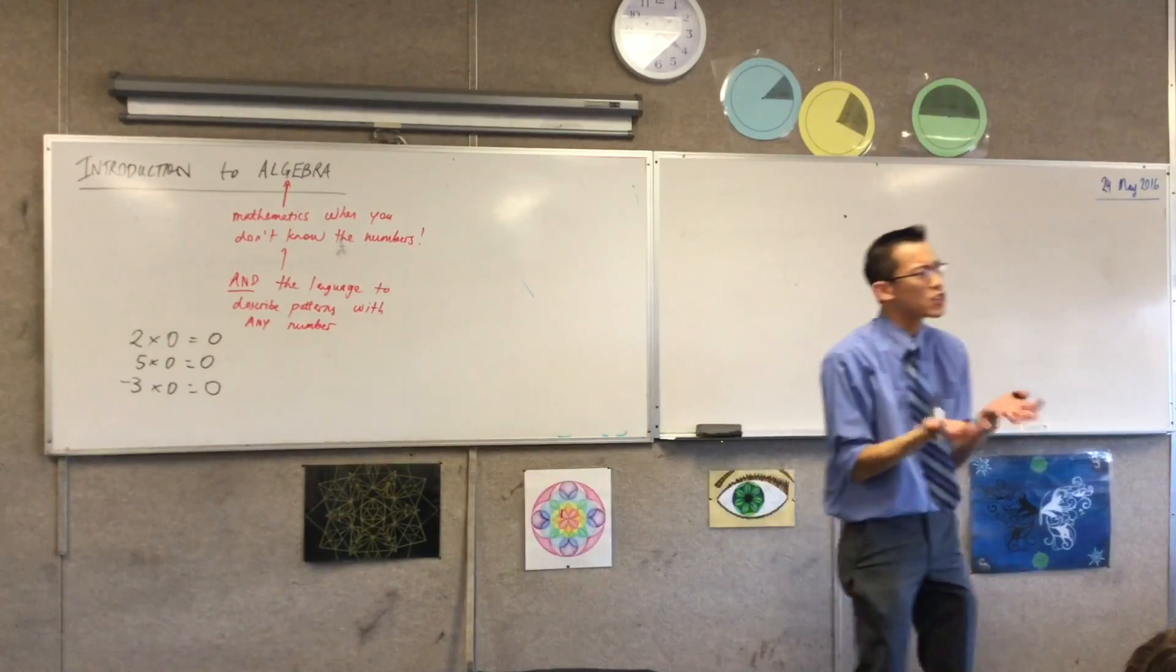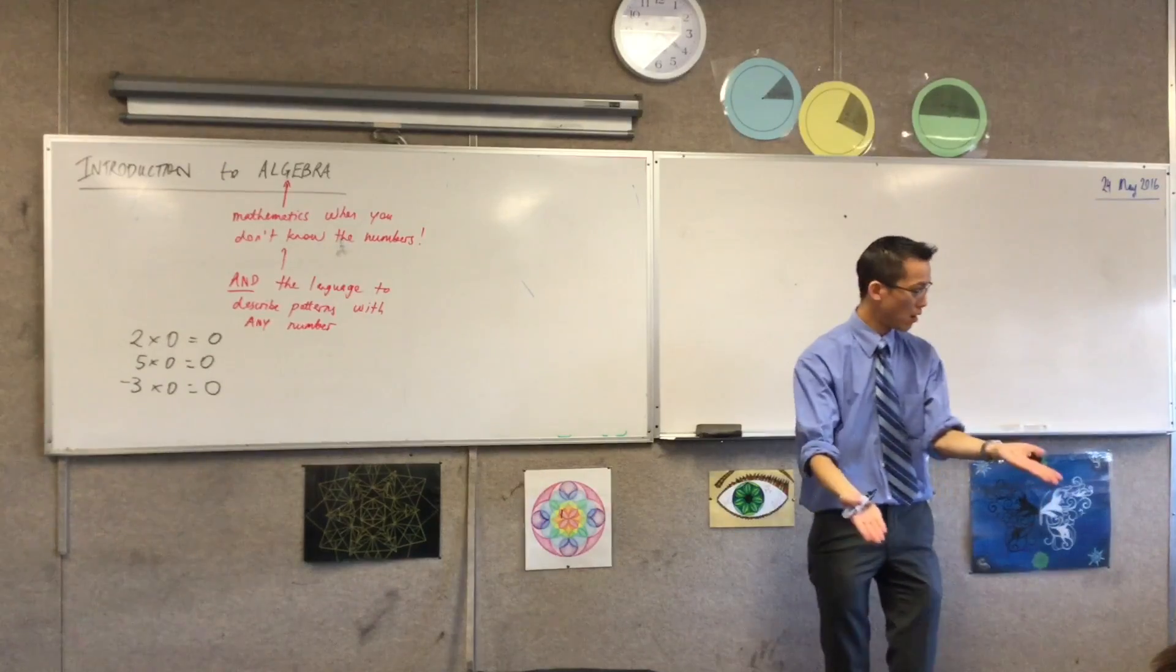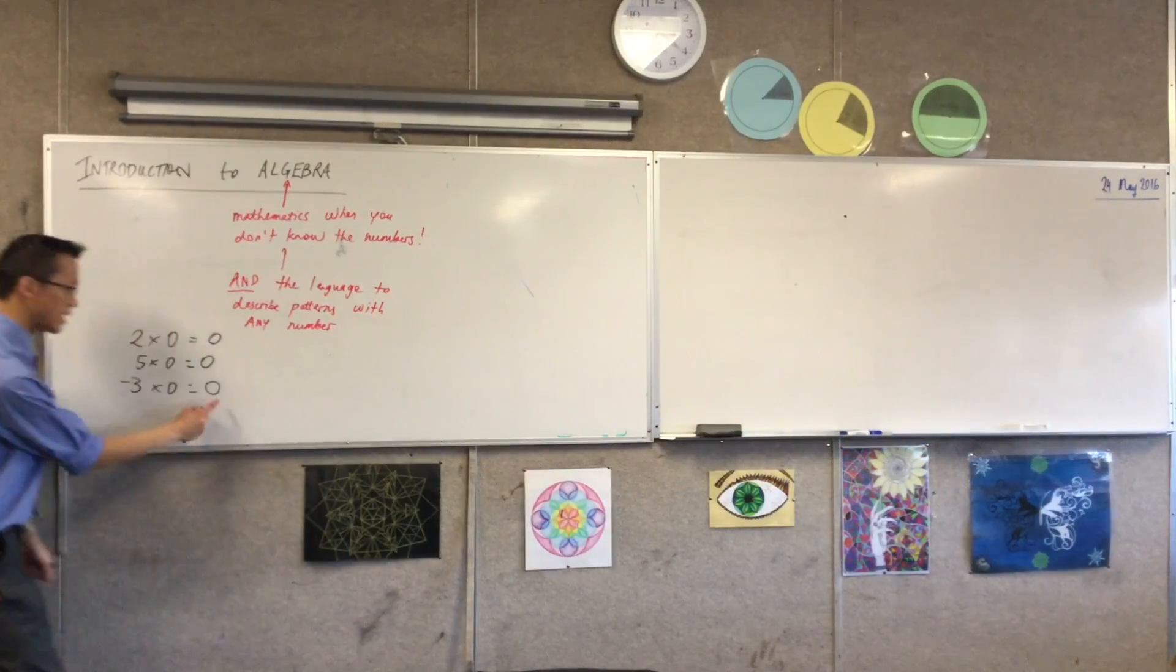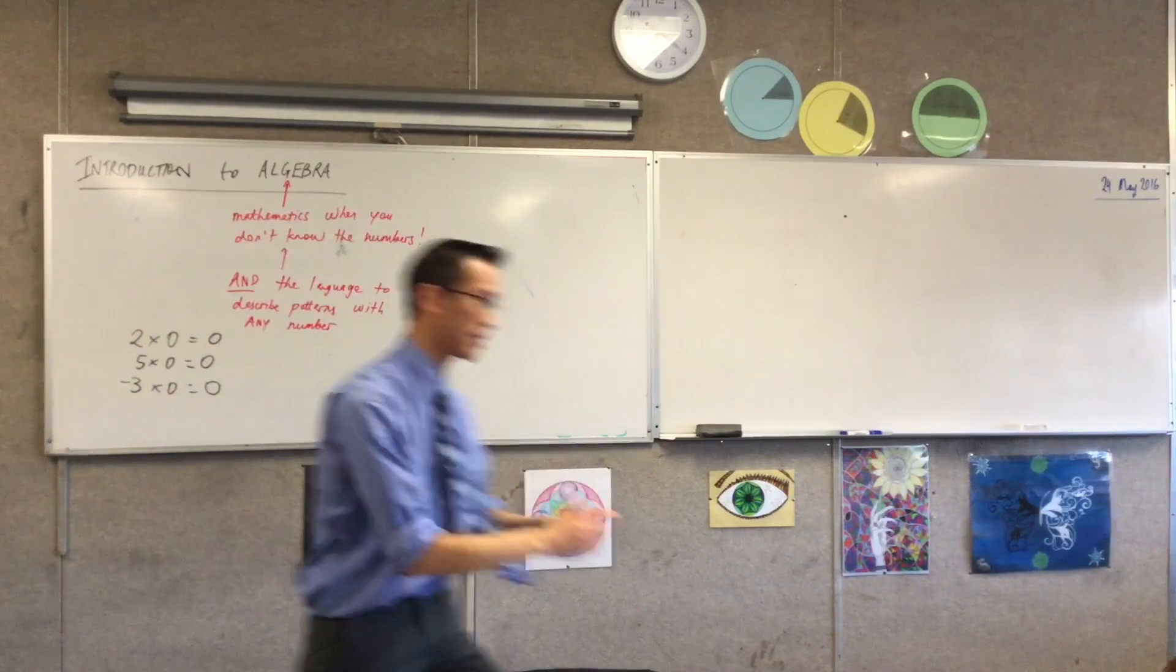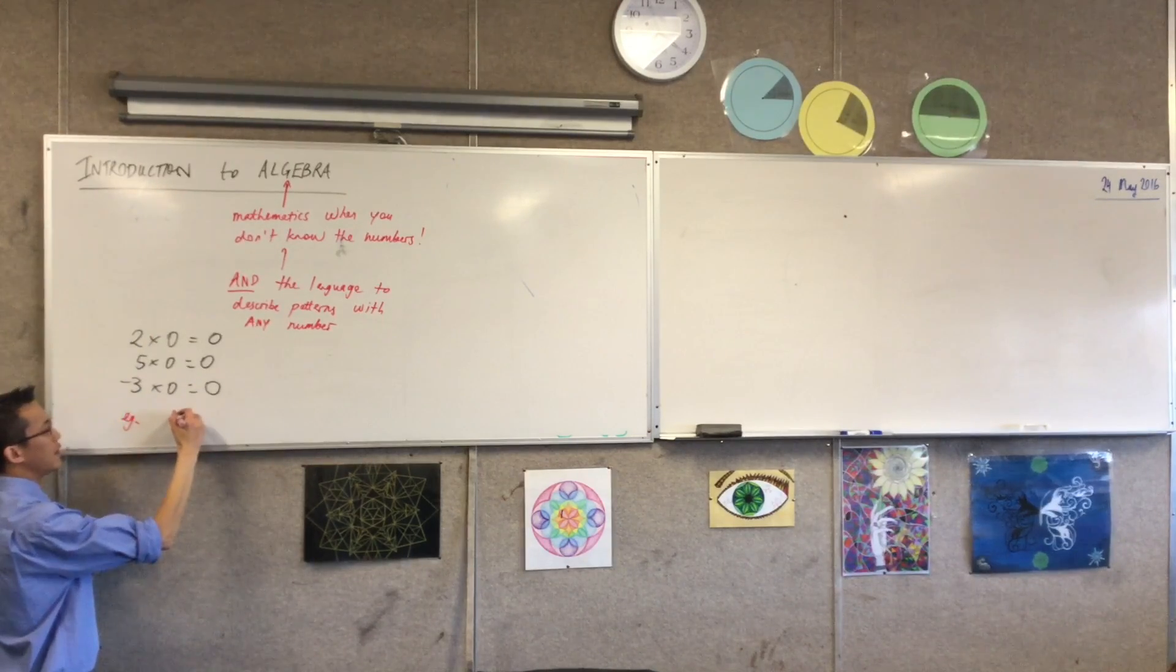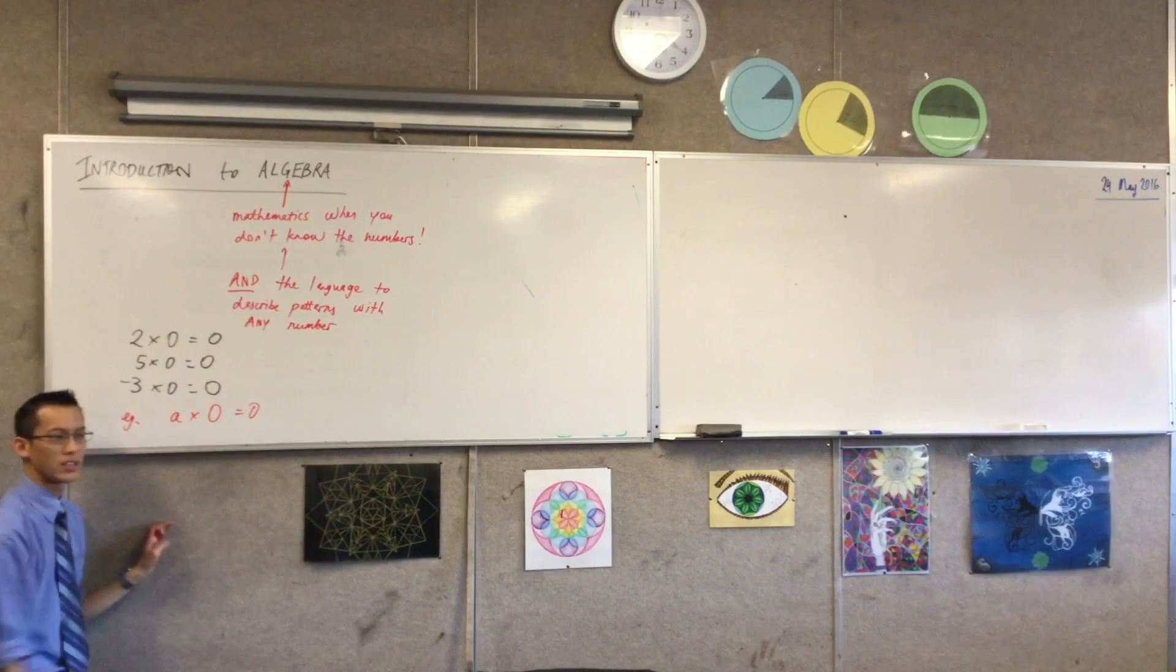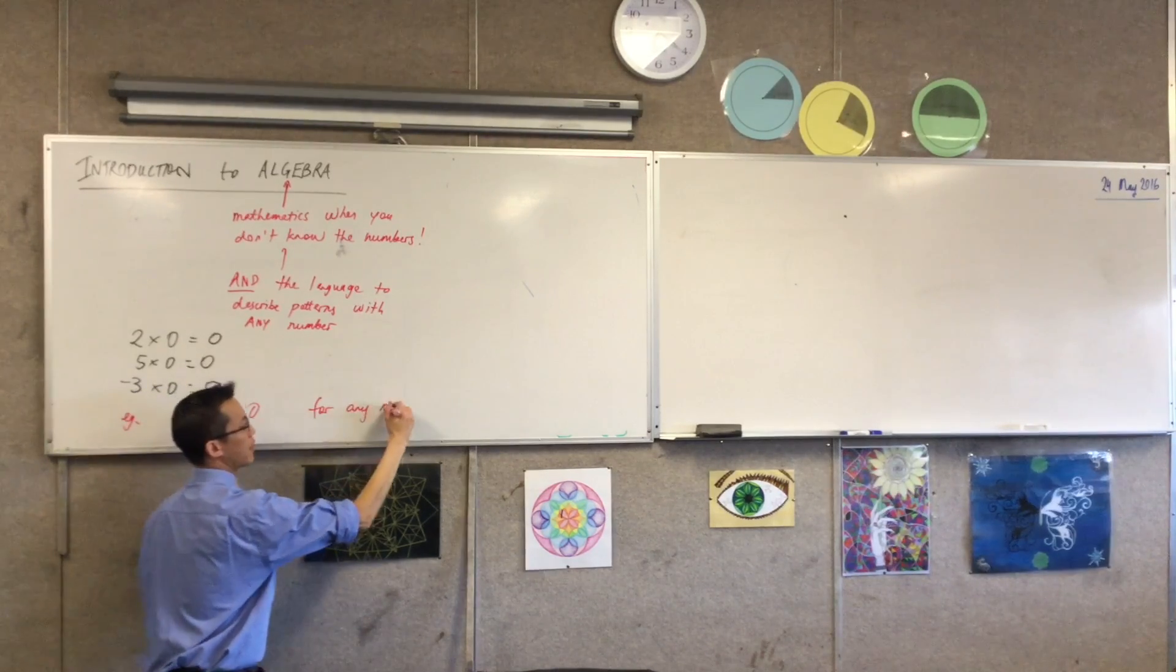Because what I've established here is clearly a pattern. You can take any number you like and multiply by 0, and you'll still get 0. So how can I describe this? How can I succinctly say 0 times any number, or any number times 0, will still equal 0? Here's one way I could write it. I could say, for example, I could say a times 0 equals 0 for any number a.